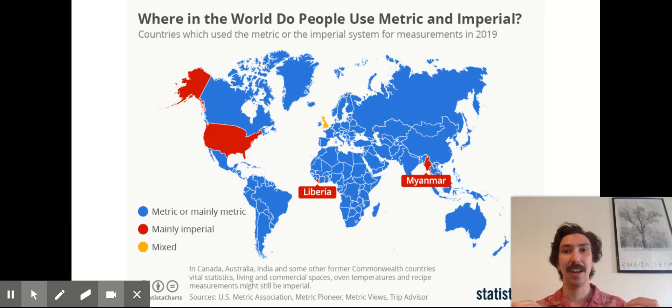And all the scientists in the world use the metric system because it's really easy if we all use the same units we can all share our data and there'll be a lot less confusion. So that's why scientists all use the same type units and they happen to be metric units.